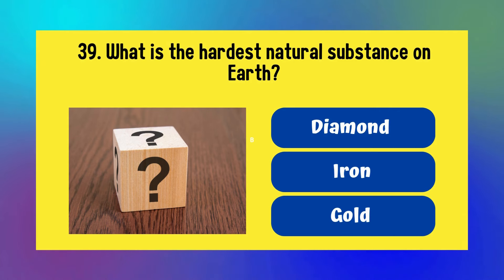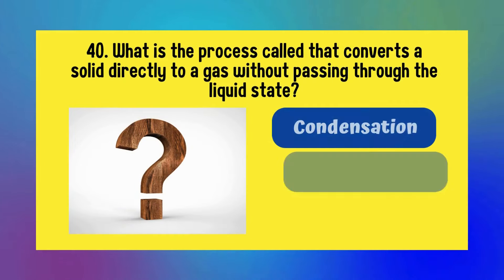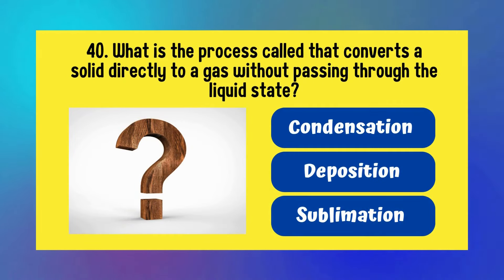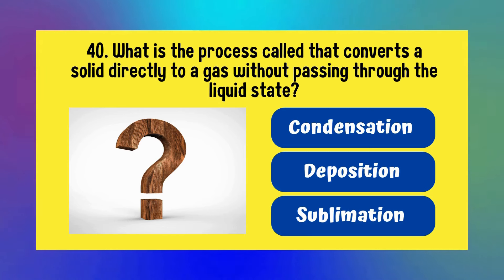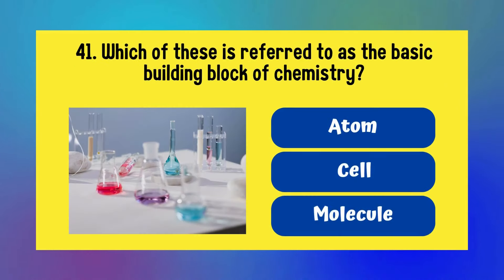What is the hardest natural substance on Earth? Diamond, iron, or gold? Answer is diamond. What is the process called that converts a solid directly to a gas without passing through the liquid state? Condensation, deposition, or sublimation? Answer is sublimation.